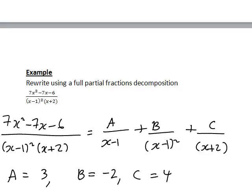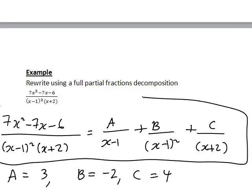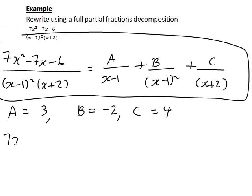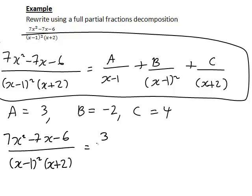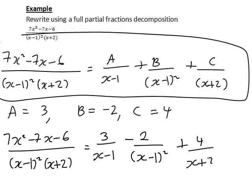Summarising, we have found a equals 3, b equals negative 2, and c equals 4. Substituting these in, the partial fractions form is: 3 divided by (x minus 1), minus 2 divided by (x minus 1) squared, plus 4 divided by (x plus 2). That is the second example of partial fractions, one where there is both a single linear factor and a repeated linear factor.